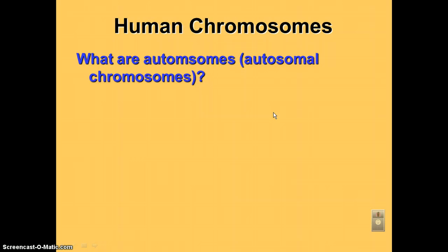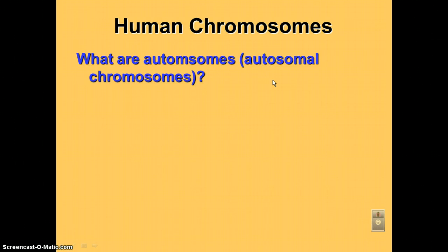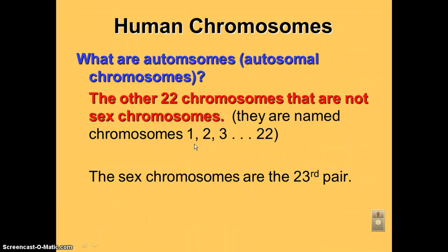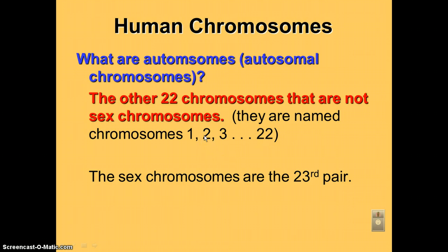What are autosomes? Sometimes these are referred to as autosomal chromosomes. These are the other 22 chromosomes that are not sex chromosomes. So you have 22 autosomes, and they are named by number. The largest is number 1, the smallest is 22, the second biggest is the 2s, the second smallest would be a 21, and so on and so forth.